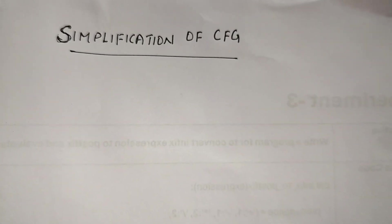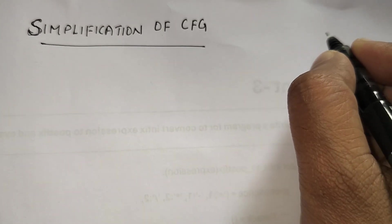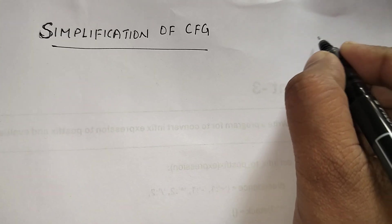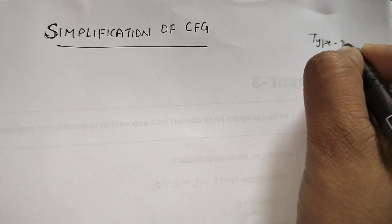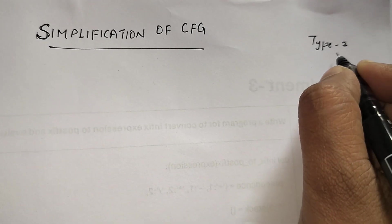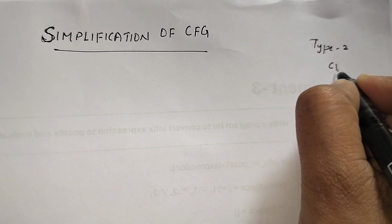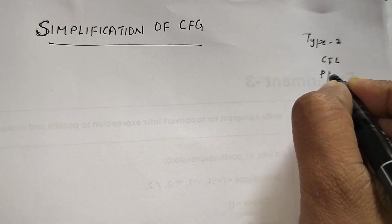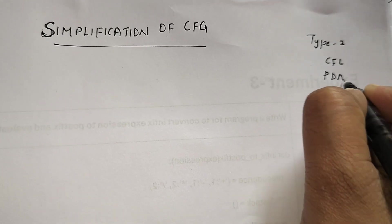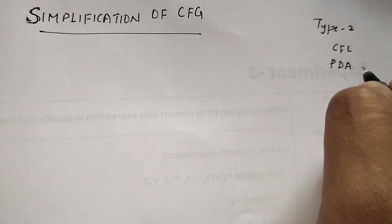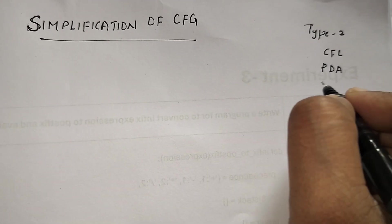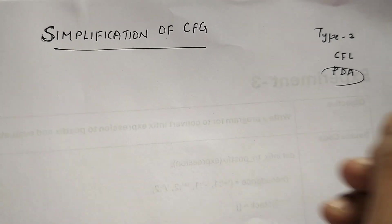The next topic is simplification of context free grammar. A context free grammar is a type 2 grammar; the corresponding languages are context free languages, and the machines that accept all context free languages are push down automata, which you will study in upcoming videos.